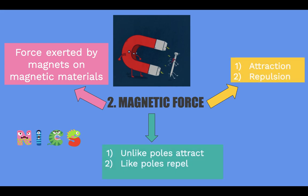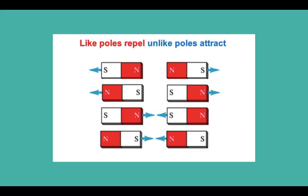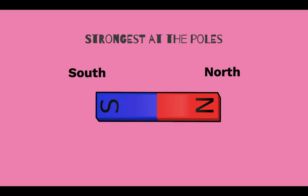Like poles of a magnet attract, while like poles of a magnet repel. It is also important to know that magnetic force is strongest at the poles.